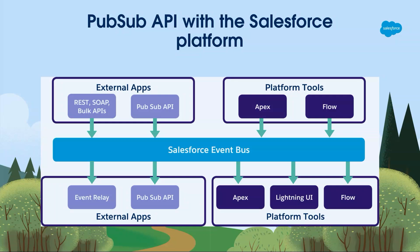Managed subscriptions — and the PubSub API in general — still uses the same Salesforce event bus as the streaming API. You can still use external applications via REST, SOAP, or Bulk API to publish to the Salesforce event bus. The PubSub API does both publish and subscribe. You might also use Event Relay to publish to Amazon EventBridge, keep things inside Salesforce with Apex and Flow, or use the EMP connector with the Lightning UI. The PubSub API is the constant through the whole event bus because it does both.